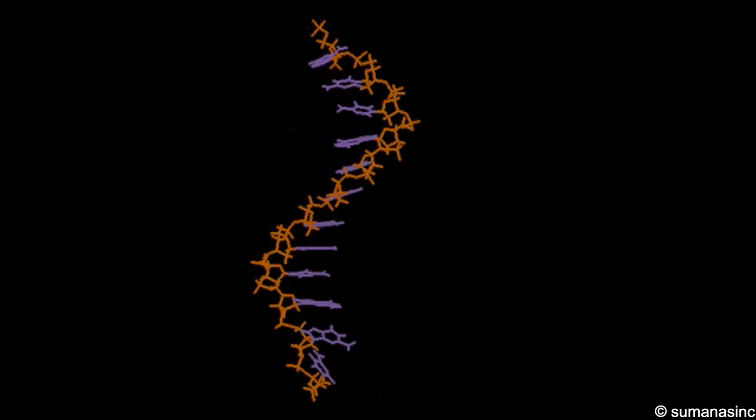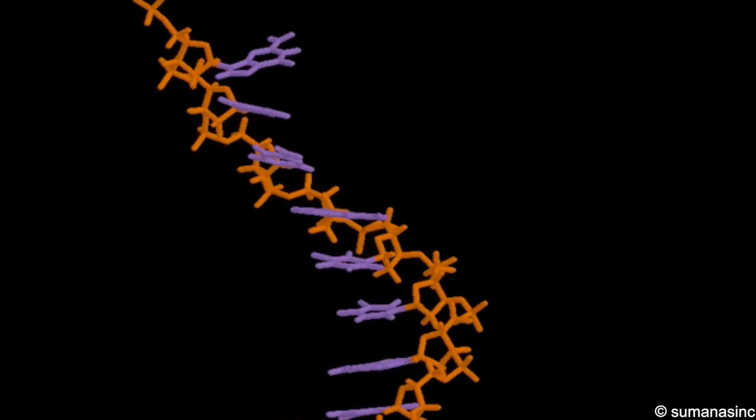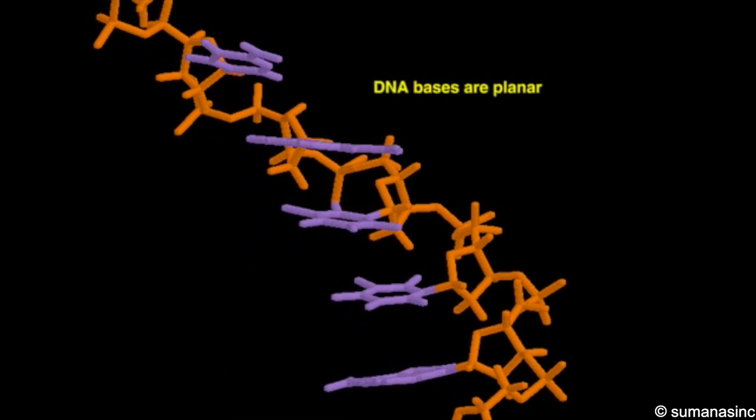A cyclic base is attached to each sugar. The bases are planar and extend out perpendicular to the path of the backbone.